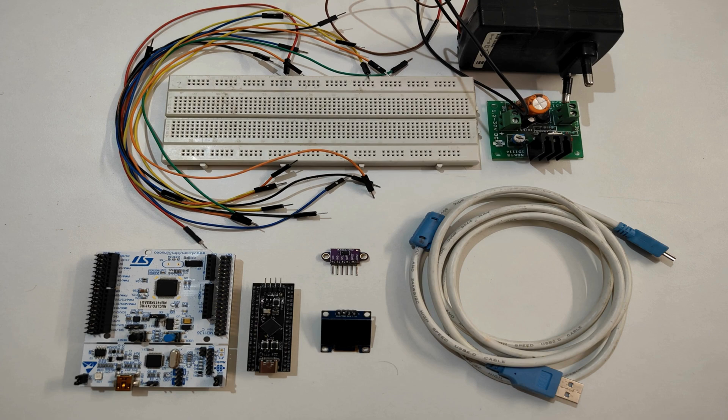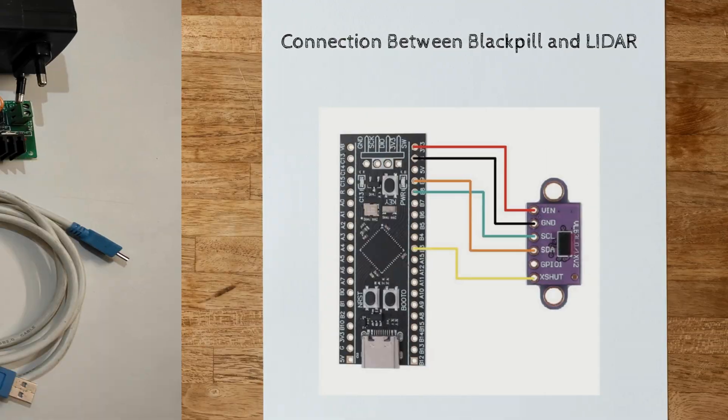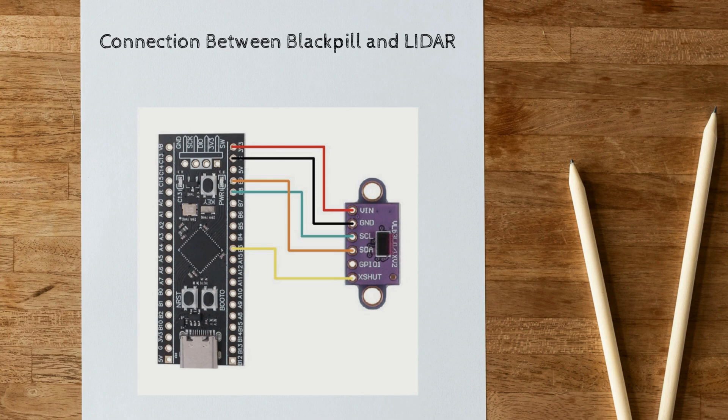Here you can see the circuit diagram for interfacing the black pill with the LIDAR sensor. Connect 3.3V of the black pill to V-in of LIDAR, ground to ground, PB9 to SDA, PB8 to SCL, and PB3 to X-Shot.